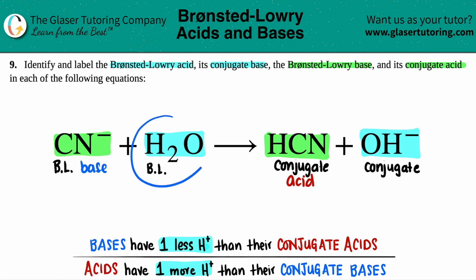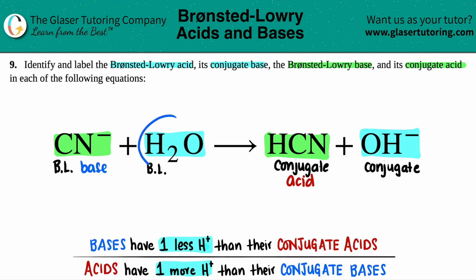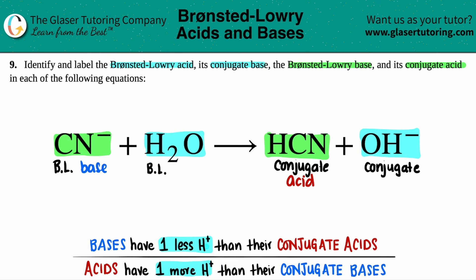Now do the same for the other pair. Look at those hydrogens: H₂O has two hydrogens and OH⁻ only has one. The one with more hydrogens is the acid, so H₂O has to be the Bronsted-Lowry acid. And then OH⁻ has to be the conjugate base.